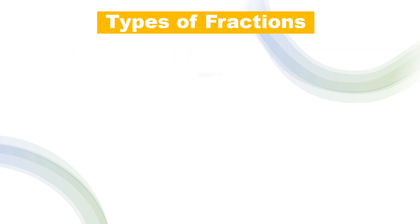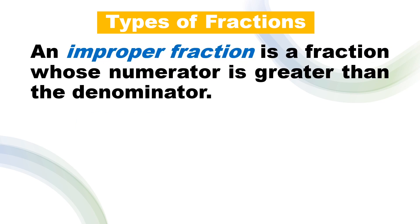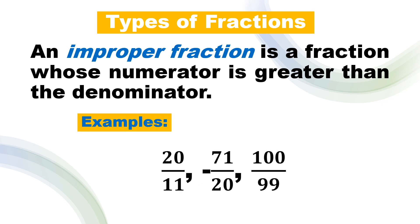The second type is the improper fraction. An improper fraction is a fraction whose numerator is greater than the denominator — meaning the numerator is larger compared to the denominator, or a is greater than b. Examples: we have 20 over 11, negative 71 over 20, and positive 100 over 99.